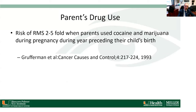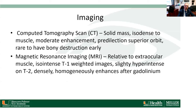One study showed a two- to five-fold increased risk of rhabdomyosarcoma when parents use cocaine and marijuana during the year preceding the child's birth. For imaging of rhabdomyosarcoma, we can do either CT or MRI. These days we mostly prefer MRI because of the reduced risk of radiation to growing tissues in these patients.